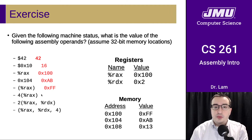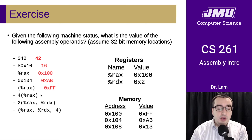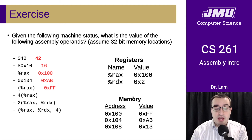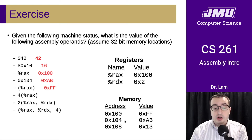The next one uses the base plus displacement addressing mode. We take the value of the RAX register and add this fixed offset of four. So we take hex 100 and add four, giving us an effective address of hex 104, which has the value hex AB.